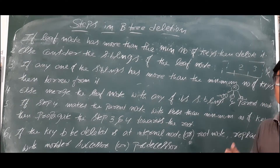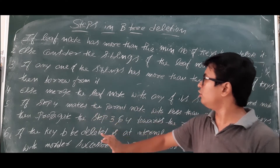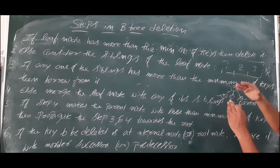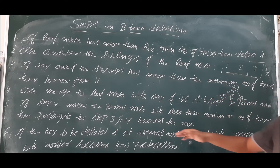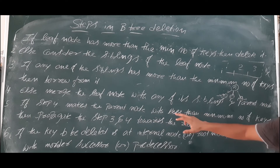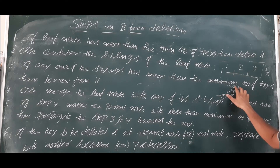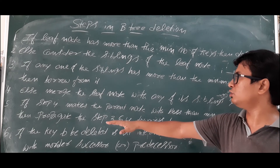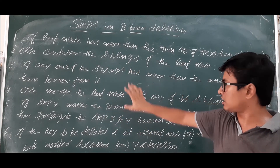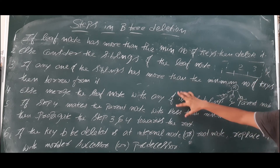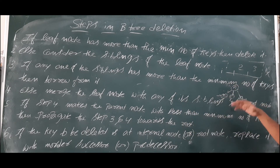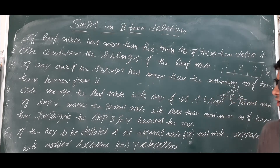If the merge in step 4 makes the parent node have fewer than the minimum number of keys — meaning once you merge, the parent has one element less than it should — then we must propagate steps 3 and 4 recursively towards the root node, so that the B-tree properties are maintained. This covers the leaf node deletion scenario.